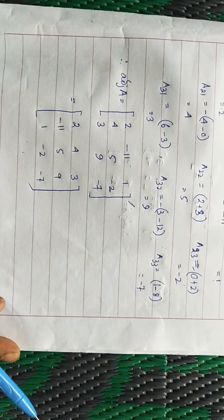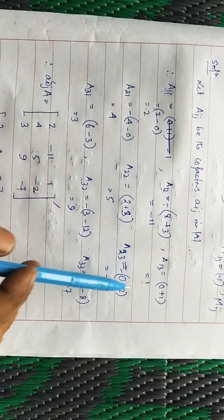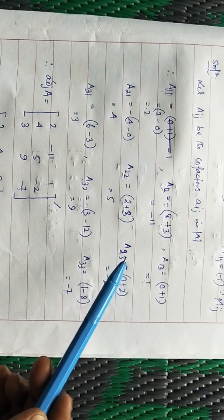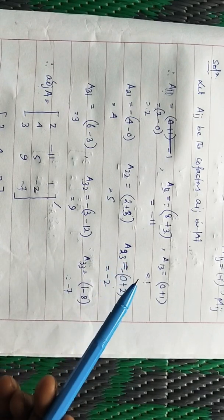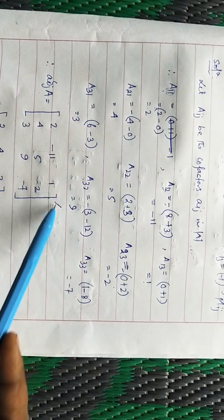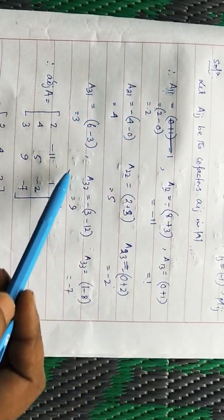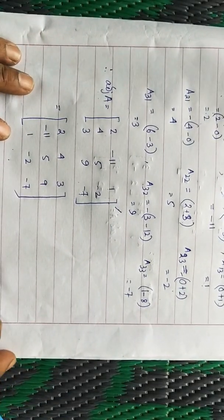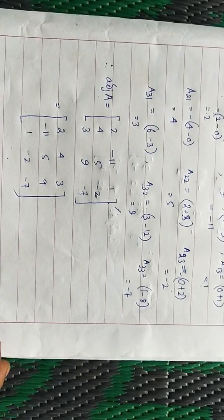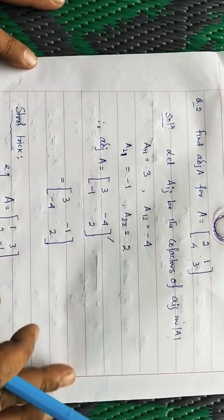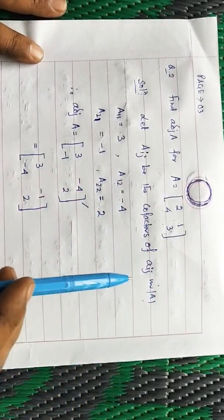Finding the adjoint of a matrix is simple — you just need to concentrate on how to find the cofactors correctly. Sometimes students make silly mistakes like replacing a plus sign by a minus sign. If you find the cofactors correctly, your result will always be correct. Now I am going to explain another problem with a 2×2 matrix. There is also a short trick for 2×2, but first I will use the standard process.